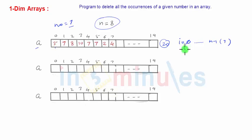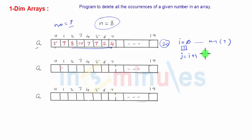Since i is 0, we check is a[0] our number — it is not, so we increment i to 1. We check is a[1] our number — yes. So currently i is 1 and that is our number. We have to shift all numbers from index 2 to 7 on the left side, so that 8 overwrites 7, 10 overwrites 8, and all numbers shift left. Using a variable j starting from i+1 up to 7 (less than n), we shift all the numbers to the left.